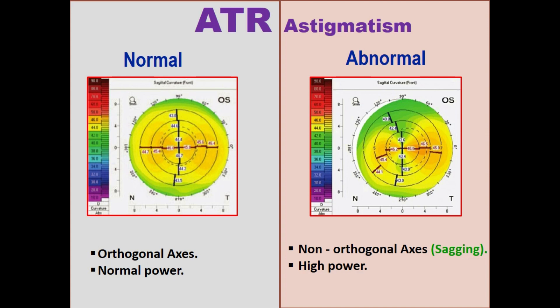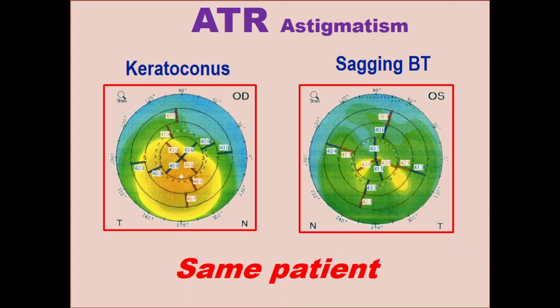Against-the-rule astigmatism. Bowtie along the horizontal corneal meridian is normal when there is no skewing—that's to say orthogonal astigmatism—and is of normal power. On the other hand, horizontal bowtie with significant skewing or sagging and high power is a sign of early corneal ectasia.